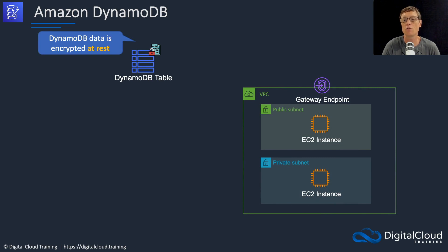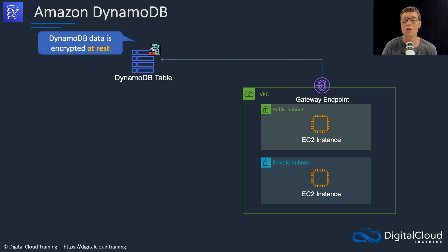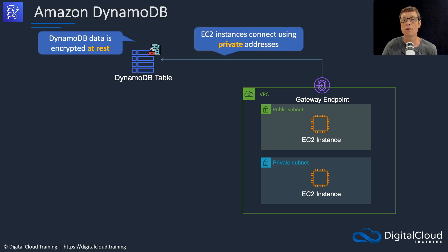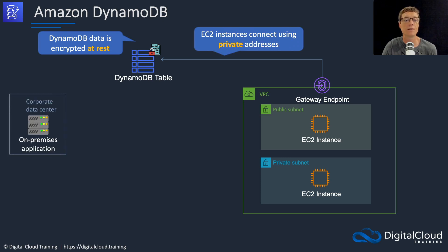You can also connect to your DynamoDB table using gateway endpoints. Remember, that's one type of VPC endpoint that you can use so that you can connect your instances — both in public or private subnets — to your DynamoDB table using private IP addresses. The instances will use a private address and they don't get routed over the internet.